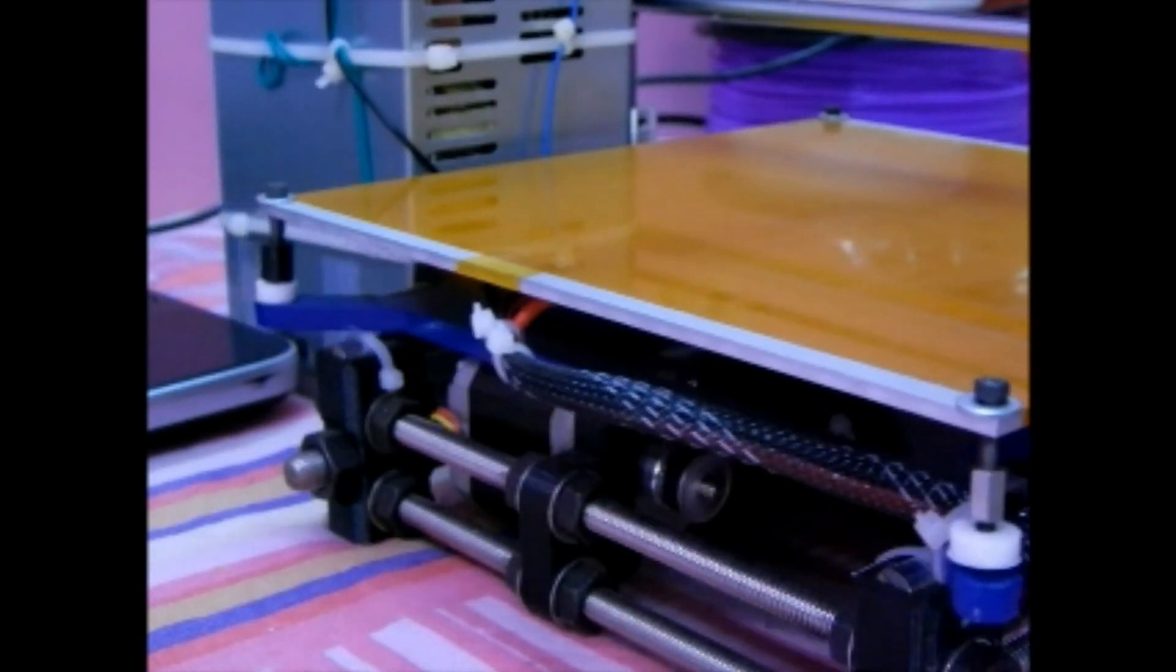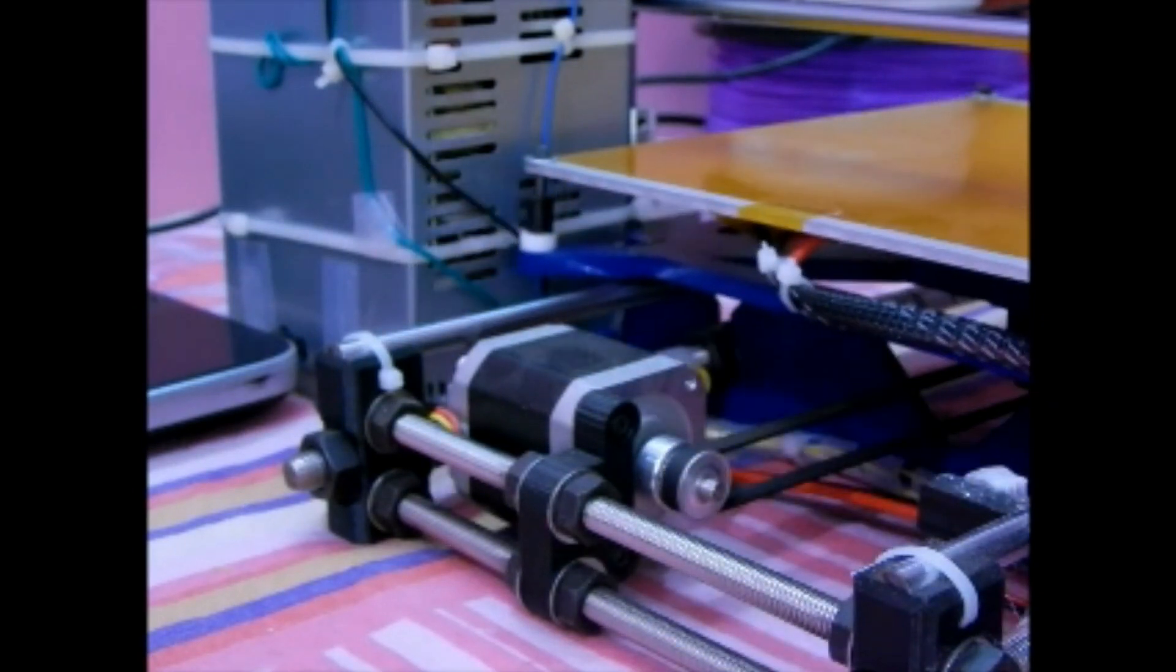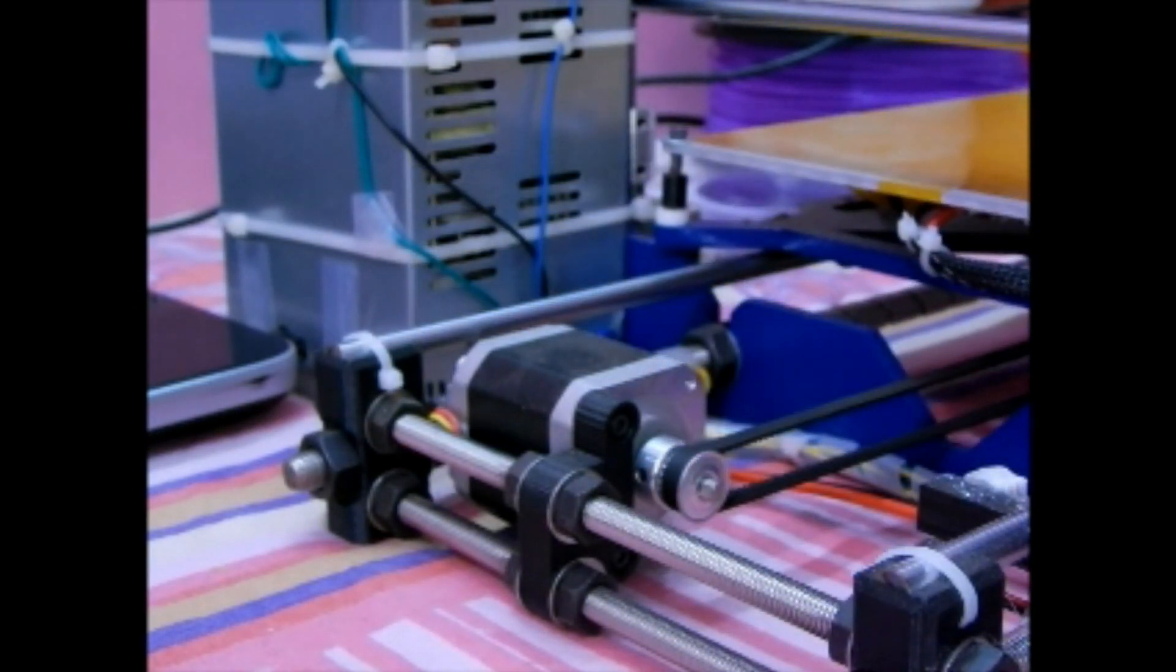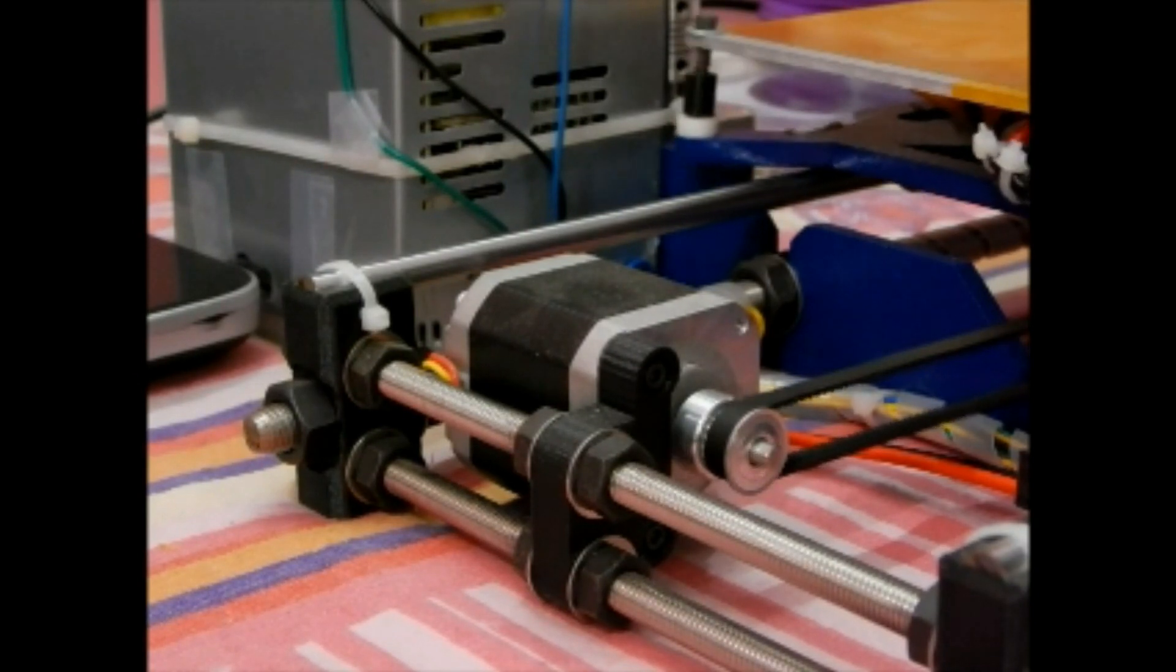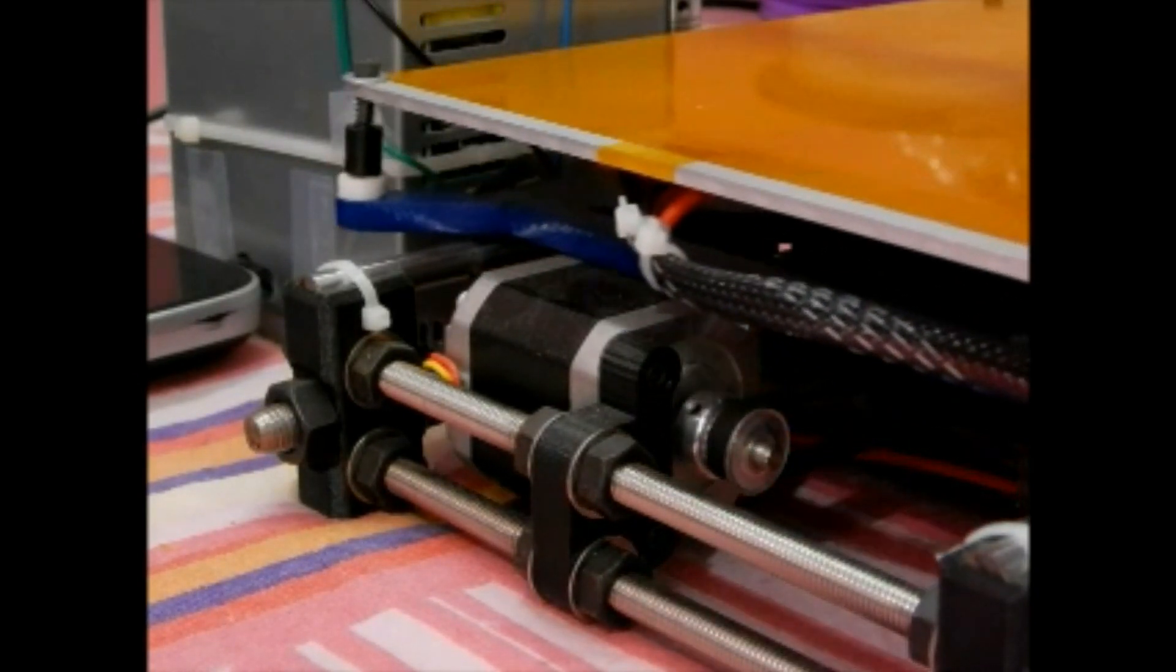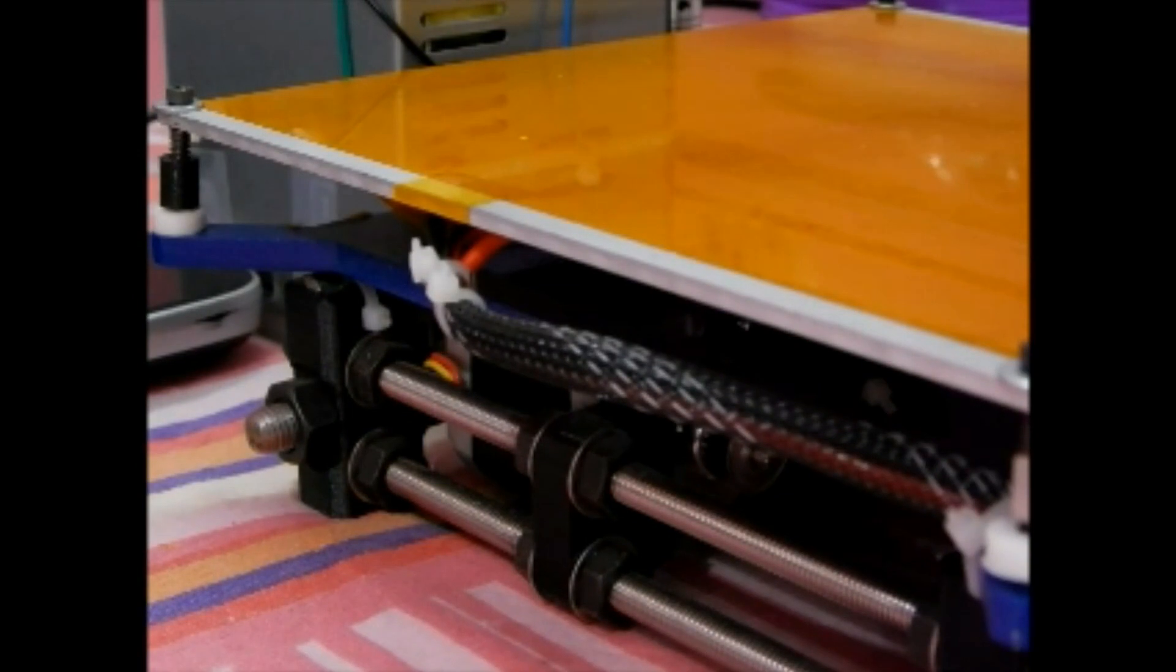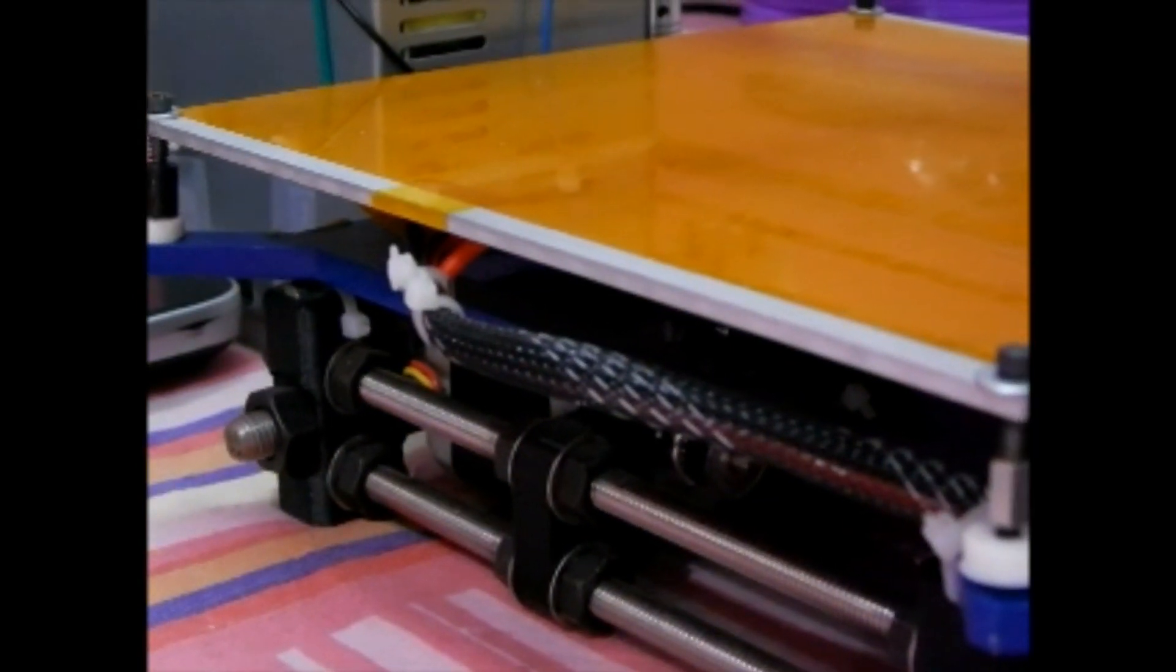Repeat the same steps for Y axis. Turn the preset of Y axis Pololu driver in anti-clockwise direction that is towards left. Now, click the Y axis home button. The motor will not move. Turn the preset a little bit in clockwise direction until the motor starts vibrating. Turn a little bit more until the motor moves smoothly and Y axis is homed.